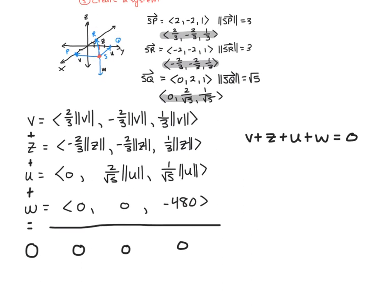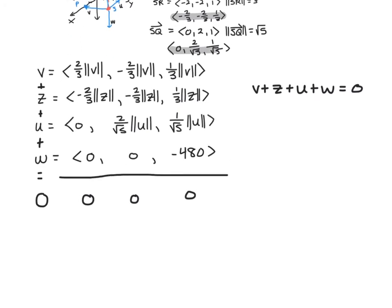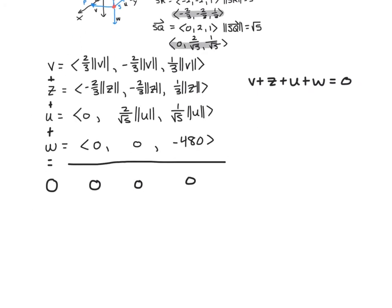We add up terms going down each column to create a system of three equations with three variables — the magnitudes (tensions). The first equation from column 1 is: (2/3)|V| - (2/3)|Z| = 0.